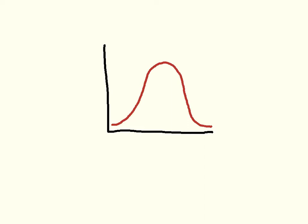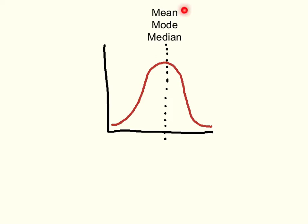So far we've talked about frequency distributions, which represent sets of data, and we've talked about measures of central tendency, which characterize the central point of a set of data. There's another characteristic of the distribution and of a set of data that's very important as well, and that is the variation or dispersion of the data.